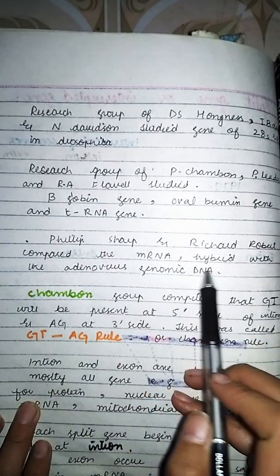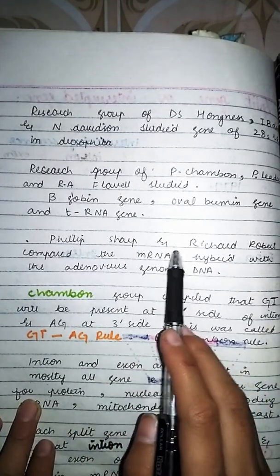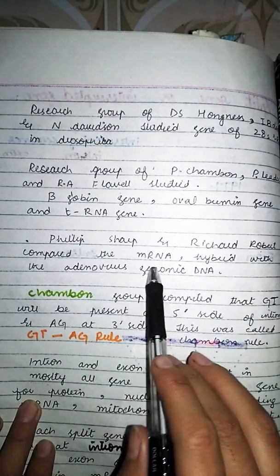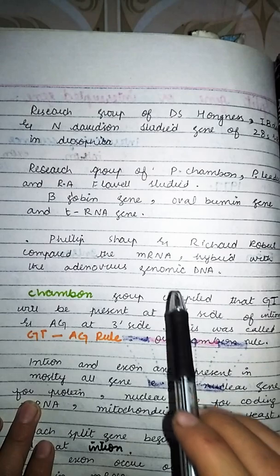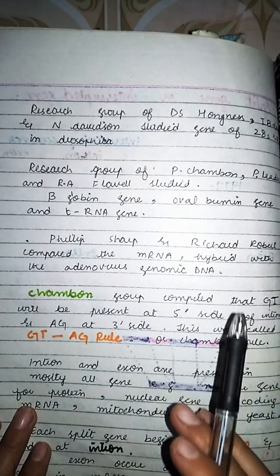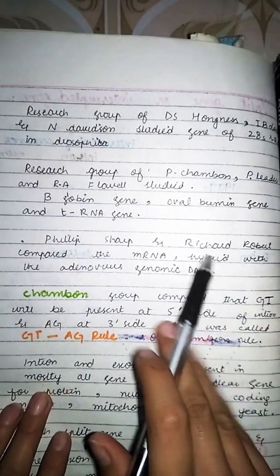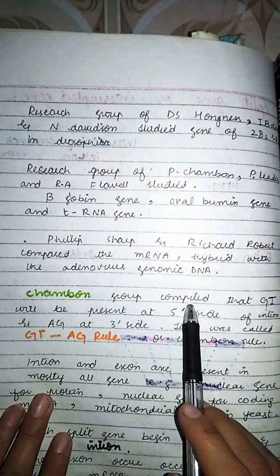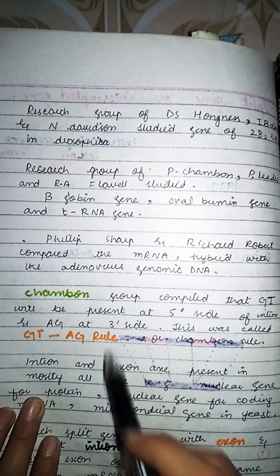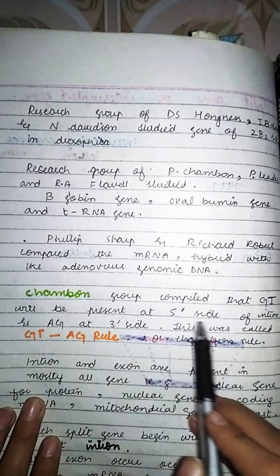Philip Sharp اور Richard Roberts نے messenger RNA hybrid کو adenovirus genomic DNA کے ساتھ compare کیا۔ جبکہ Chambon group نے یہ compile کیا کہ GT sequence، intron کے 5 prime site پر present ہوگا۔